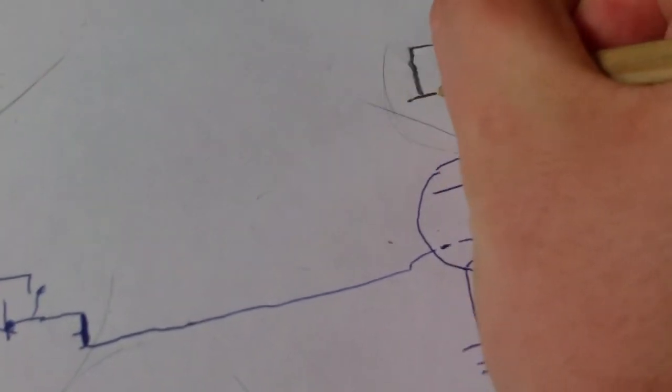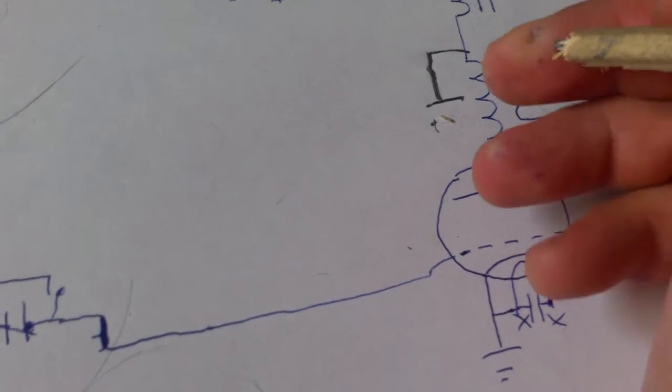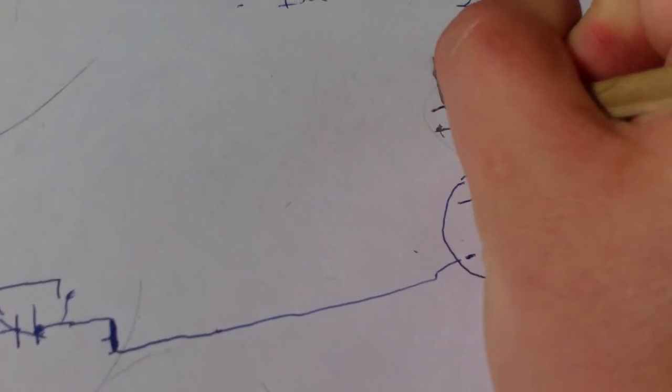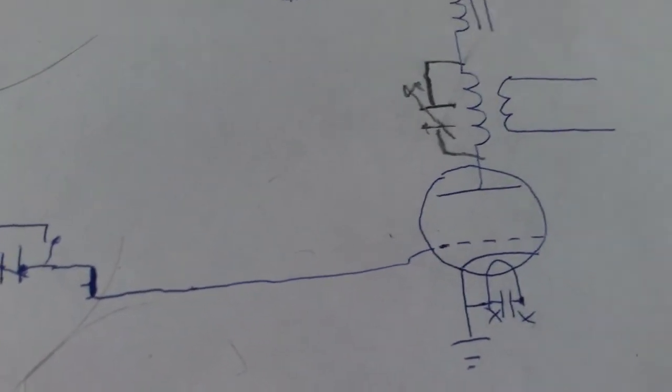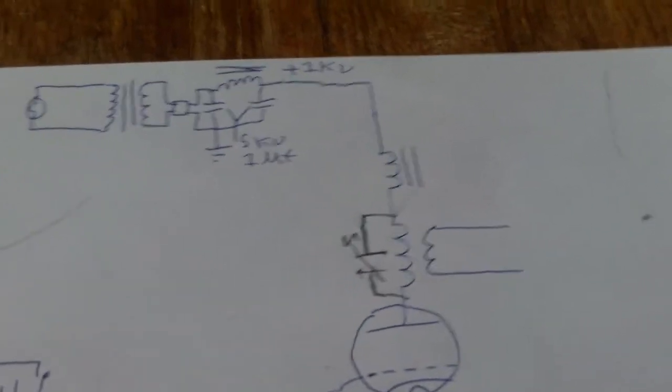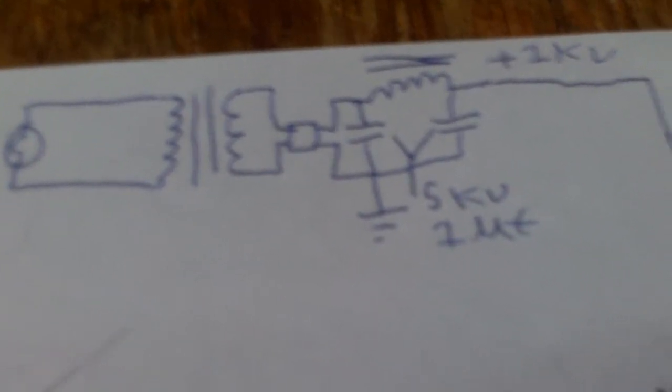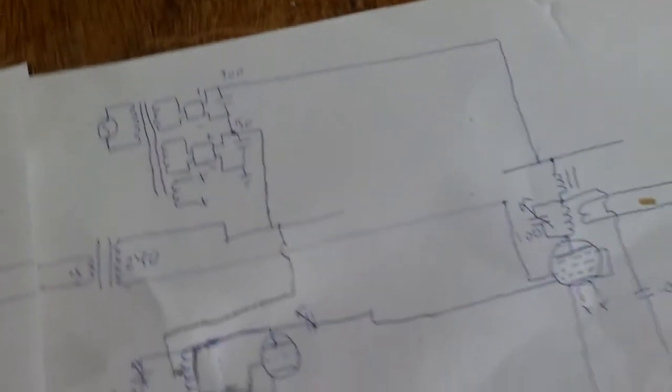Oh, okay, there's also supposed to be a capacitor here. This is also a 100 picofarad capacitor there. Then there's another RF choke. And right here is the power supply for that tube, which is 1kV. And then that goes to the light bulb.